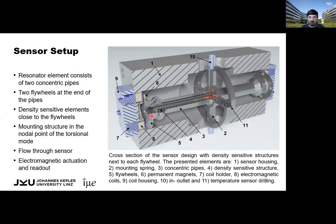In the flywheels we have four permanent magnets which, in combination with electromagnetic coils, are used to actuate and read out the torsional motion of the resonator. The resonator element is fixed to the sensor housing via a torsional spring located in the center, at the same position as the nodal point of the torsional mode.